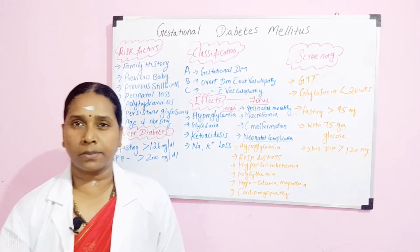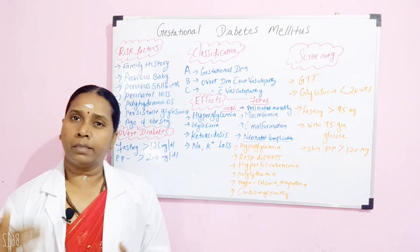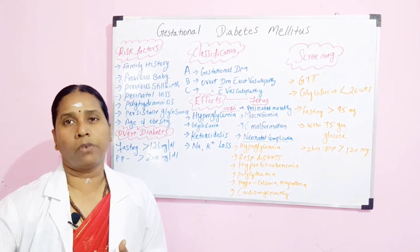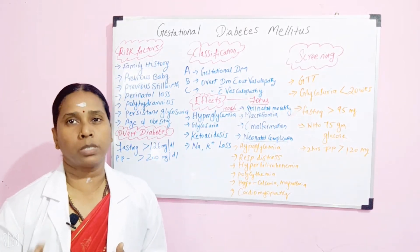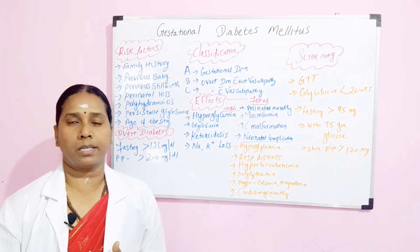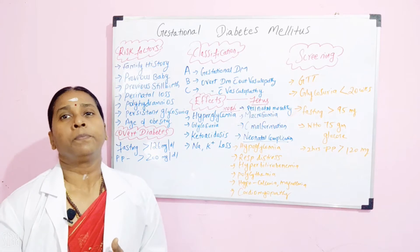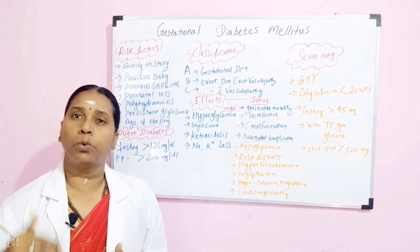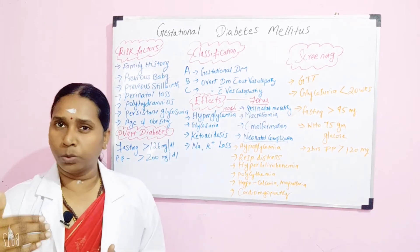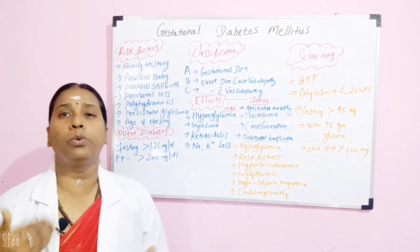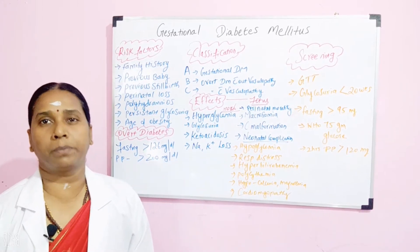The next factor is a previous baby with a birth weight of more than 4 kg. At that time you have to suspect there may be gestational diabetes, because the previous birth was a big baby — that is, the baby was above 4 kg. Then it can indicate gestational diabetes during this pregnancy also.